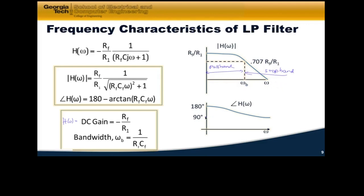The pass band is the frequencies at which I pass through a signal with very little attenuation. And the stop band is when I start attenuating those signals. So low frequencies are passed through and high frequencies are attenuated. The angle looks like this, the angle plot. So remember it starts out at 180. And then at high frequencies, this will go to 90 degrees.